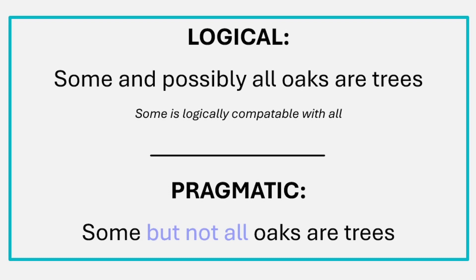However, most of the time when we use the word 'some,' we are not aiming for the logical interpretation. We want the listener to interpret it in a pragmatic way, because that is more useful in everyday communication. The pragmatic way of interpreting 'some' is: 'some, but not all oaks are trees.' For this specific under-informative sentence, that is wrong because all oaks are trees of course. So if you hear 'some oaks are trees' and interpret it pragmatically, you will answer false. If you interpret it logically, you will say true, because 'some' means 'some and possibly all.'